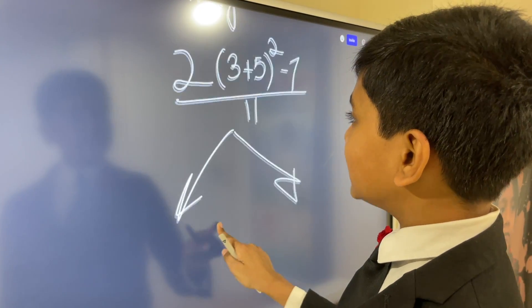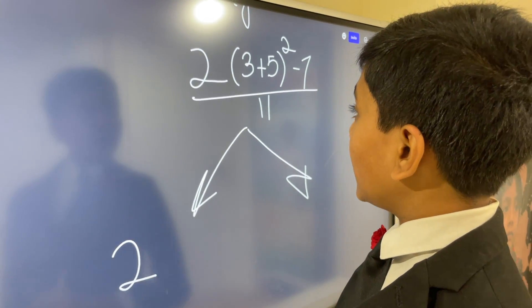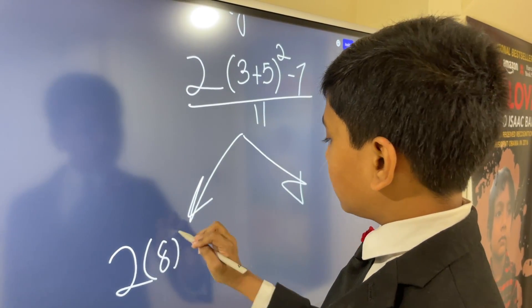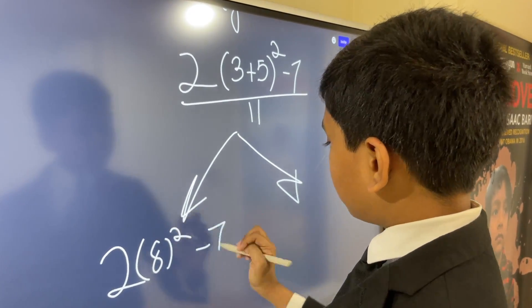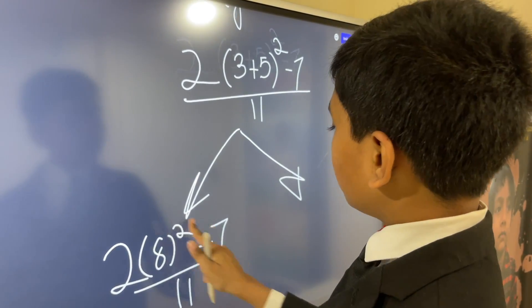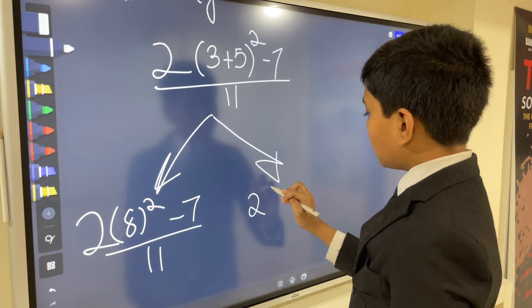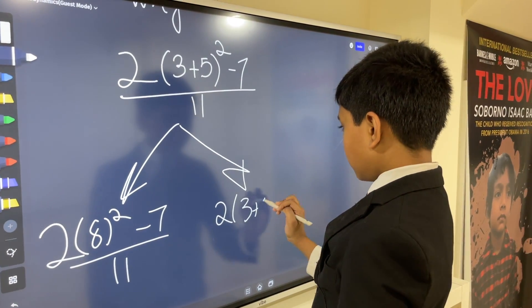So, the first person says, we have two, right? And then we have three plus five, which is eight. We just have the squared over there. Minus seven over 11. Meanwhile, the other guy starts by saying, oh, I got it. We can write it like this, first of all.